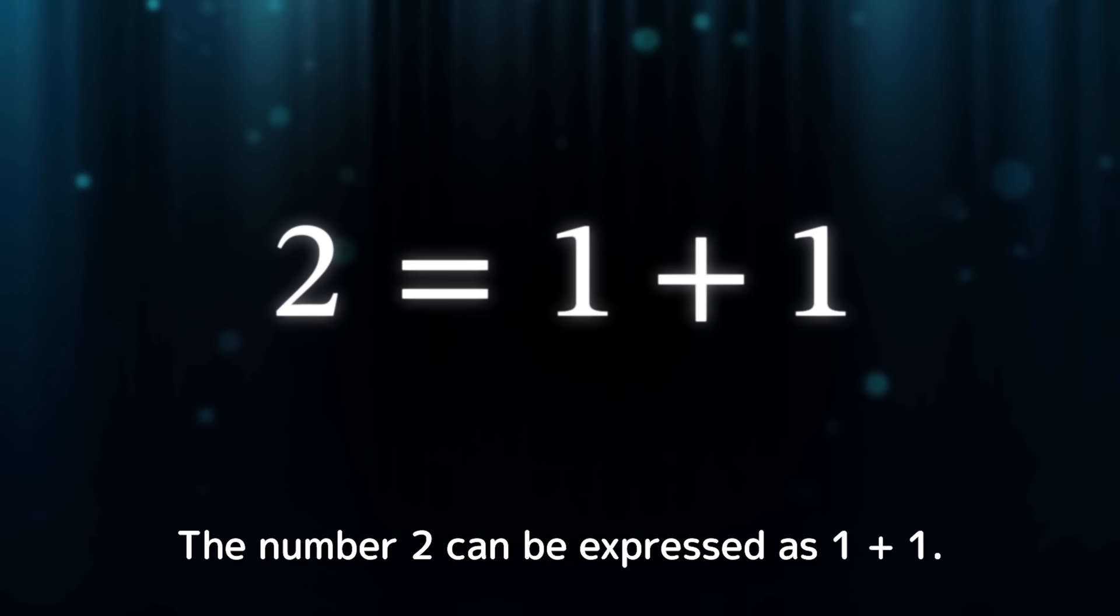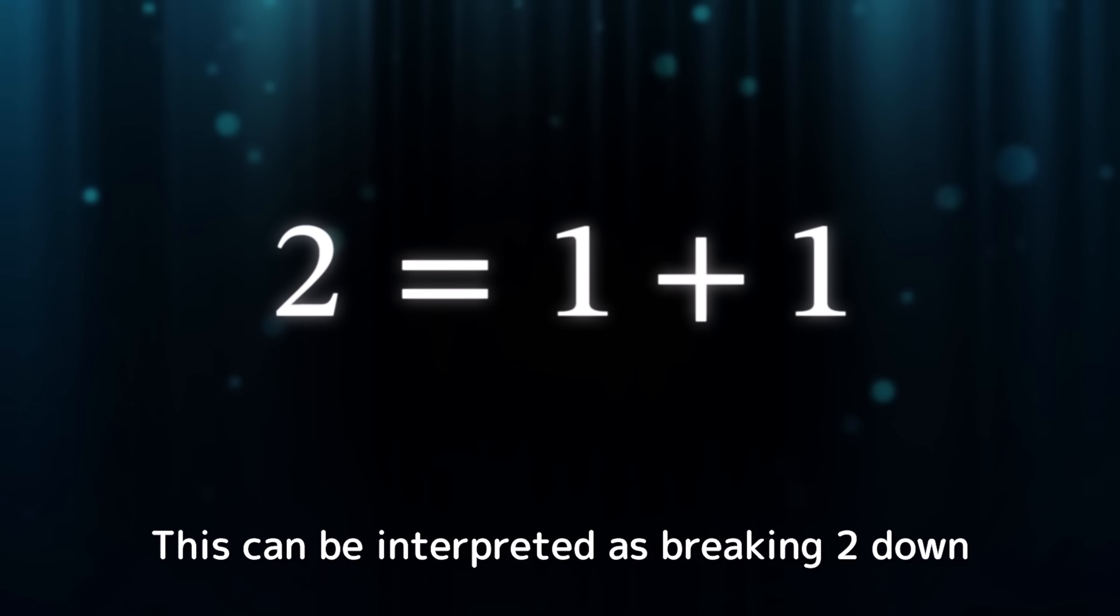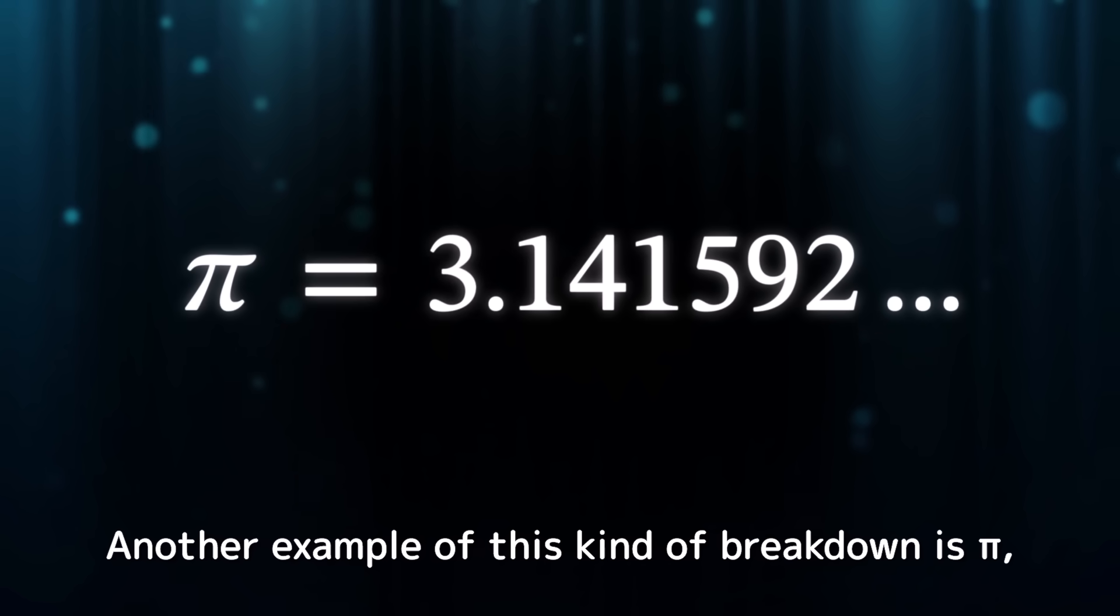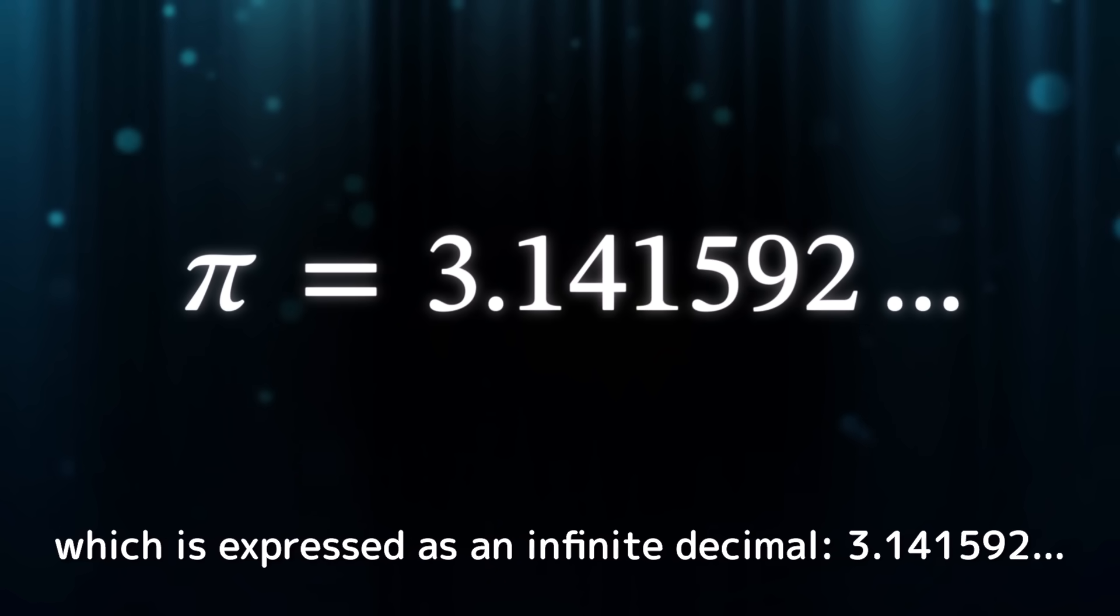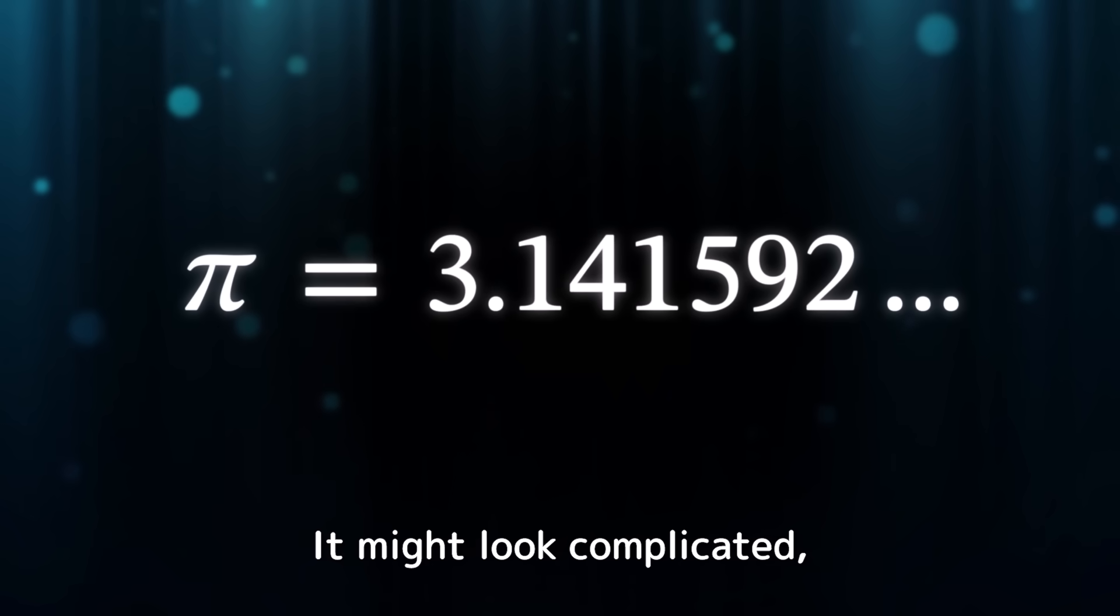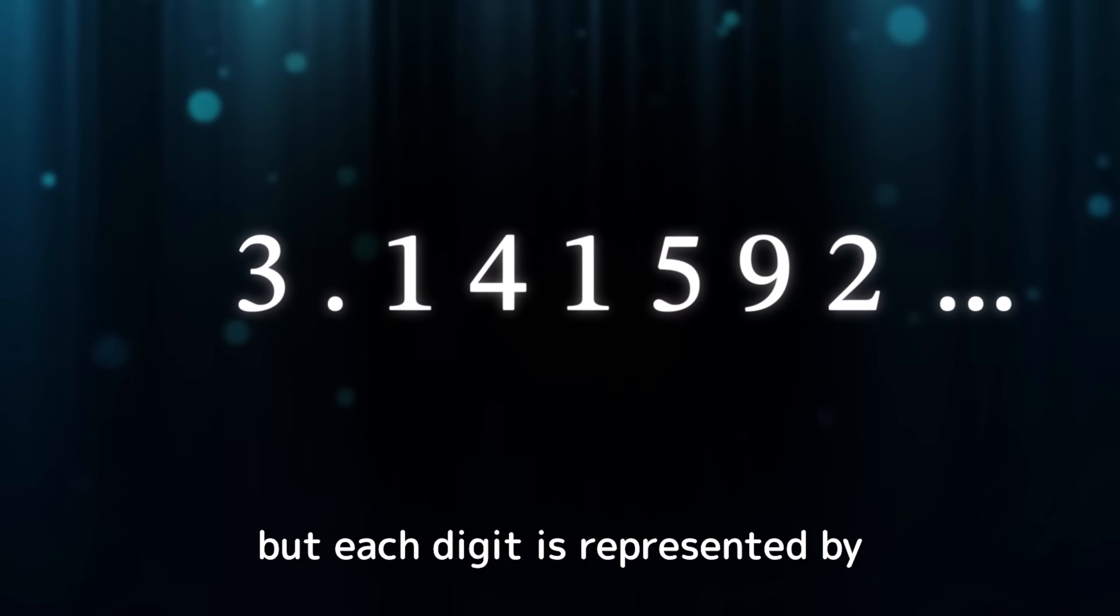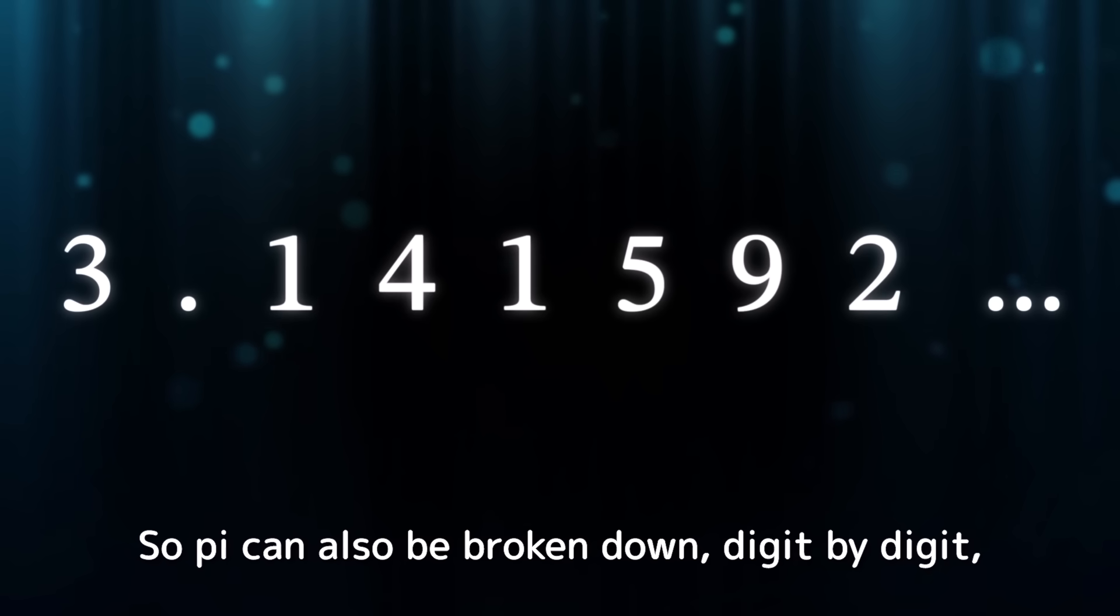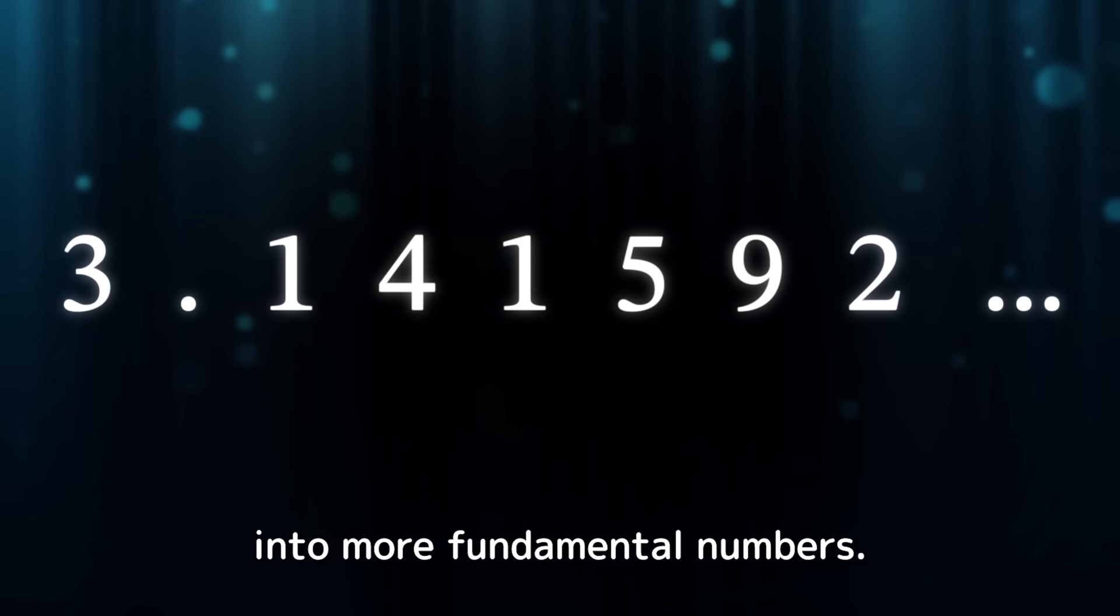The number two can be expressed as 1 plus 1. This can be interpreted as breaking two down into the more fundamental number one. Another example of this kind of breakdown is pi, which is expressed as an infinite decimal, 3.141592, and so on. It might look complicated, but each digit is represented by one of the fundamental numbers from 0 to 9. So pi can also be broken down digit by digit into more fundamental numbers.